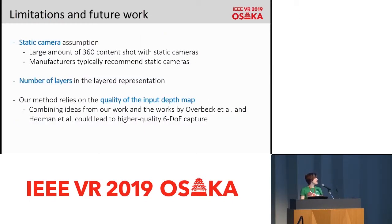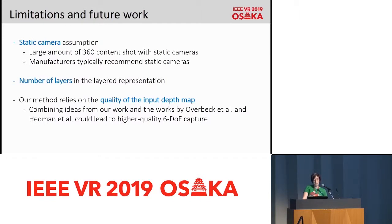The main limitations of our system are: we assume that the camera is static, though we think this assumption is reasonable since a considerable amount of 360 content is shot with static cameras. Our layer representation features three layers, and in theory more could be needed depending on scene complexity — analysis of the optimal number of layers could be future work. Our method also relies on the quality of the input depth map, and still introduces some artifacts at occlusion boundaries, so completely eliminating these remains an open challenge for future research.